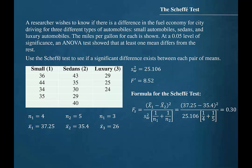This gives us a test value of 0.30. Since 0.30 is less than 8.52, no significant difference exists between the mean of small cars and the mean of sedans.